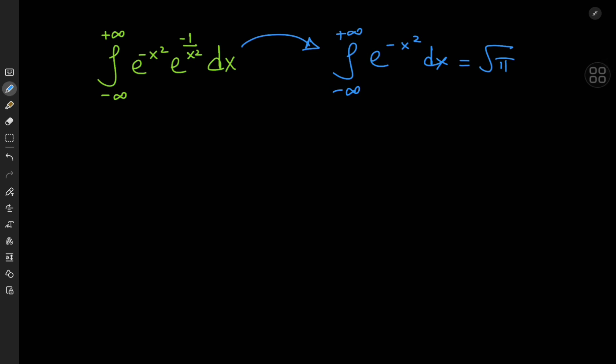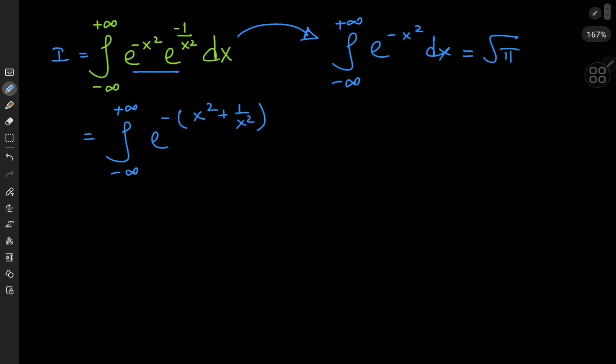And that's actually a pretty good strategy. But how exactly do we execute that strategy? First things first, for reference purposes, we call our integral i. A good way to start would be to multiply the two exponential terms and write this as the integral from negative to positive infinity of e to the negative x squared plus 1 by x squared dx, where I've just factored out a negative sign.